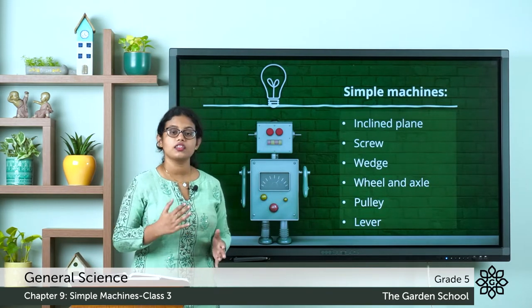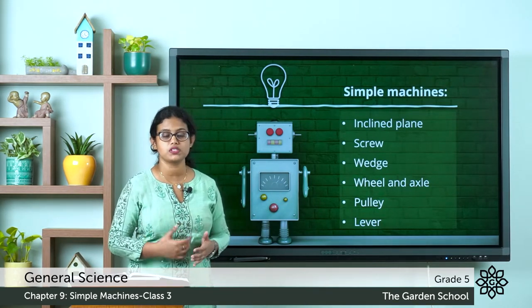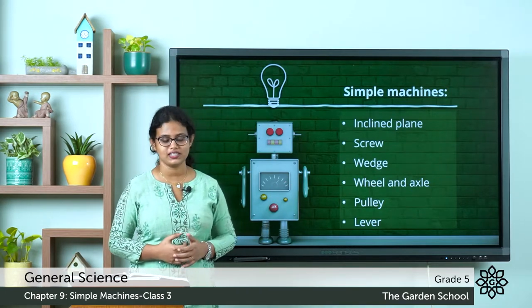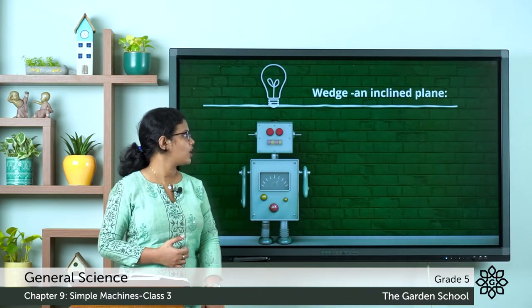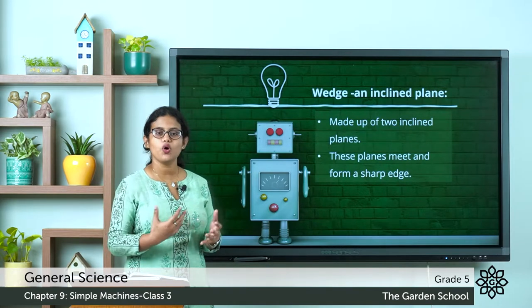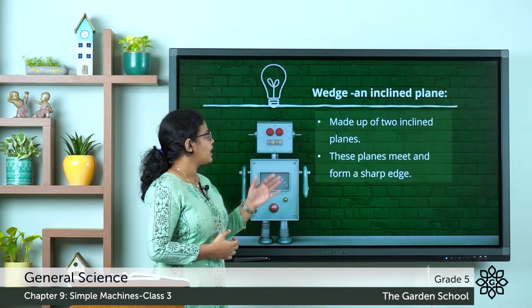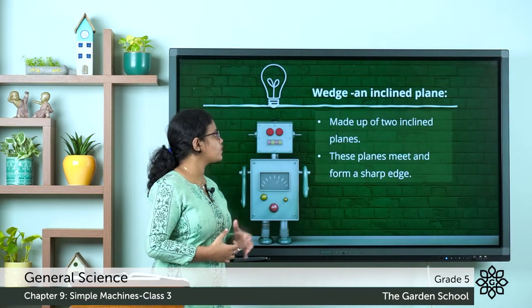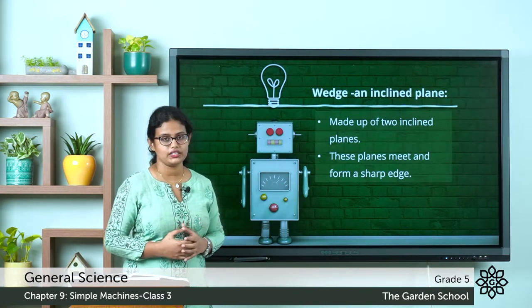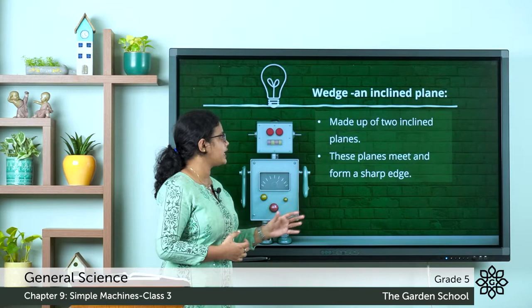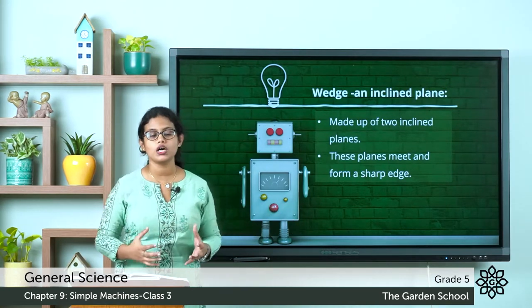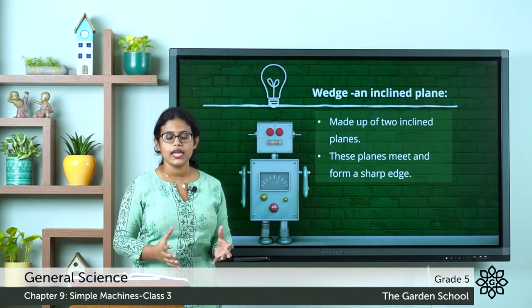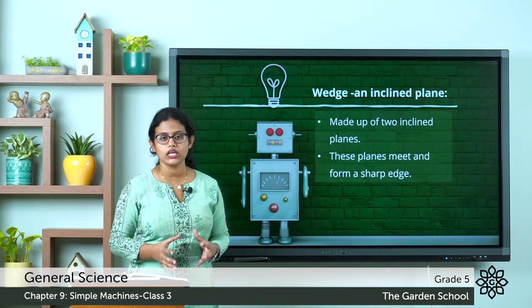Let's discuss the next two types of simple machines — wedge and wheel and axle. Starting with wedge: a wedge is an inclined plane, specifically made up of two inclined planes that meet and form a sharp edge.